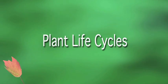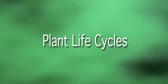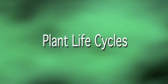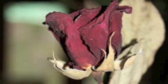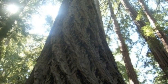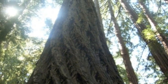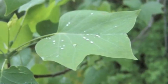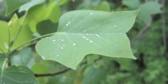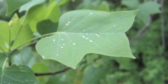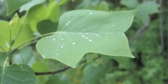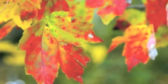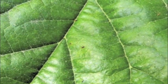Plant life cycles adapt to their habitat also. Some plants only live for a short amount of time while others live for many years. The most diverse adaptation that plants have are their leaves, which can do amazing things such as capture water, change colors, and act as a fingerprint of the plant.